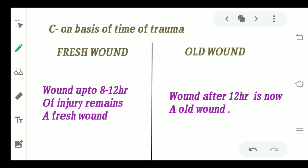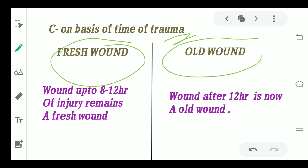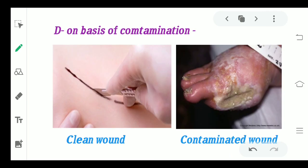On the basis of the time of trauma, a wound can either be a fresh wound or an old wound. A wound up to 8 to 12 hours is said to be a fresh wound, and after 12 hours it is said to be an old wound. This is the basis of classification by time.